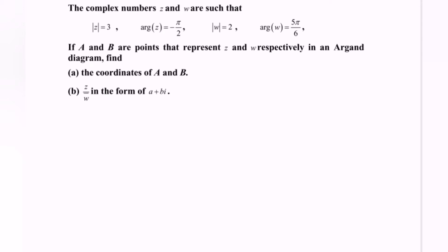If A and B are points that represent z and w respectively in an Argand diagram, find the coordinates of A and B, then express the complex number z over the conjugate of w in the form a plus bi.